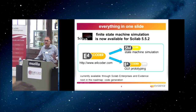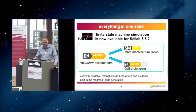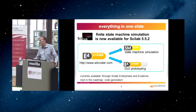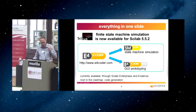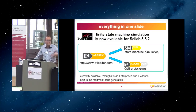Just to start — everything in one slide. The important message I want to give you is that finite state machine simulation is now available on CIDAB. The toolbox we are presenting, E4Coder, is providing two main things currently: SMQ, which is state machine simulation, and E4Coder GUI, which is GUI prototyping. It's available now for CIDAB — you can go on the website, download the installation manual, attach the Atoms repository, download it and use it. It's available as a commercial license through CIDAB Enterprise and Evidence, and the next step will be the porting of the code generation.